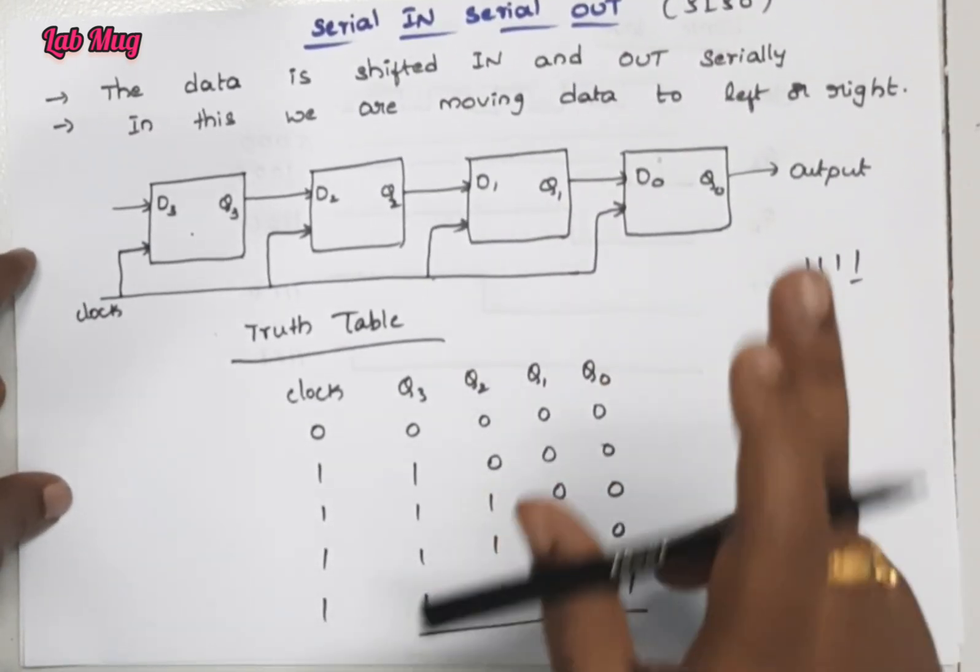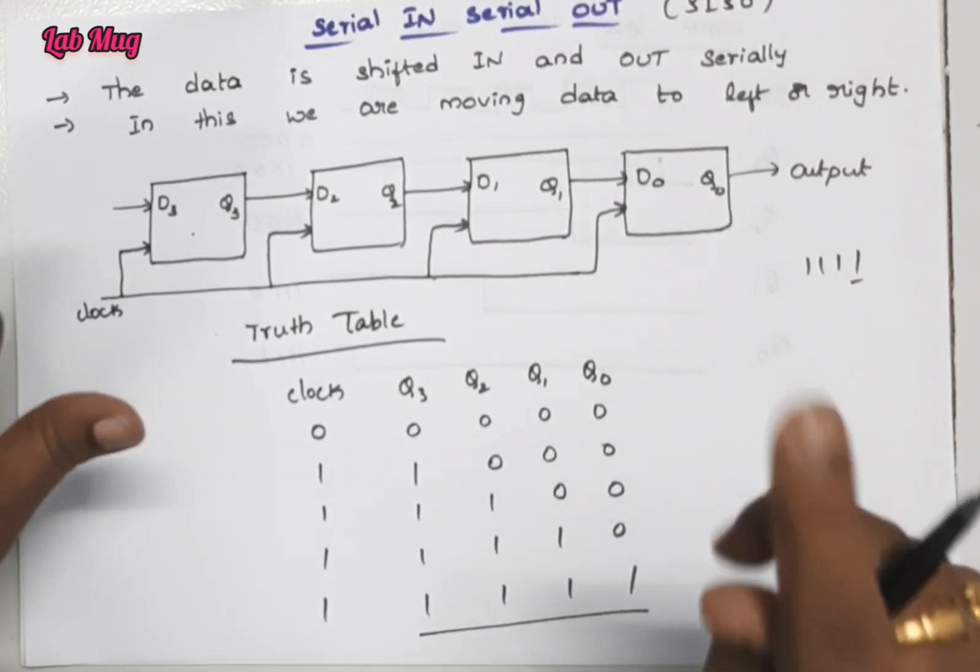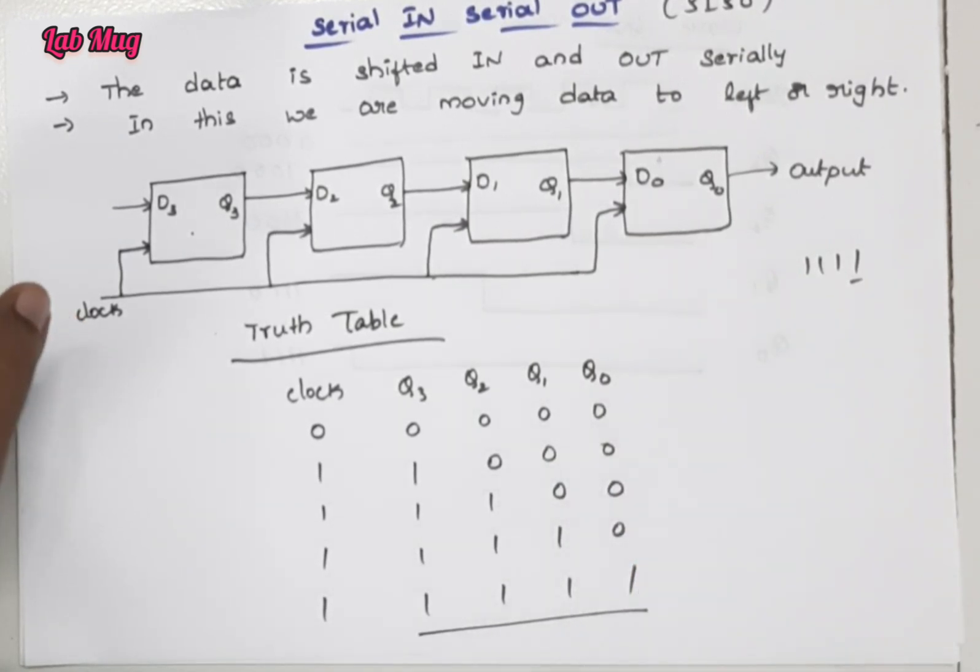This is how we draw the waveform for serial in serial out. Here for four flip-flops, we take data serially and we get the output also serially. That is the main thing in serial in serial out shift register. Thank you.